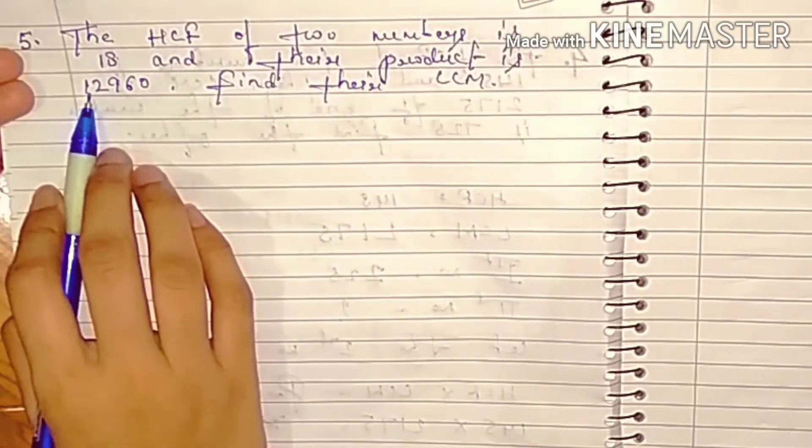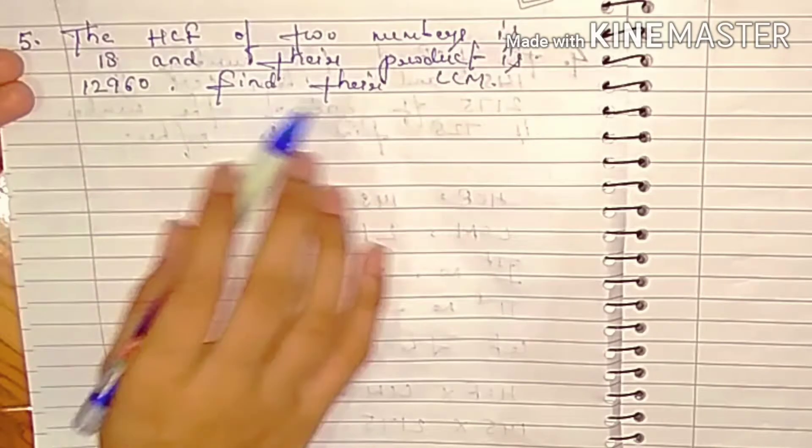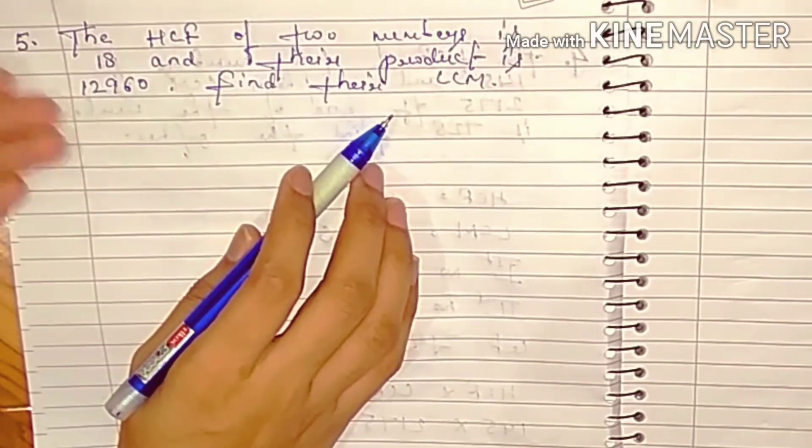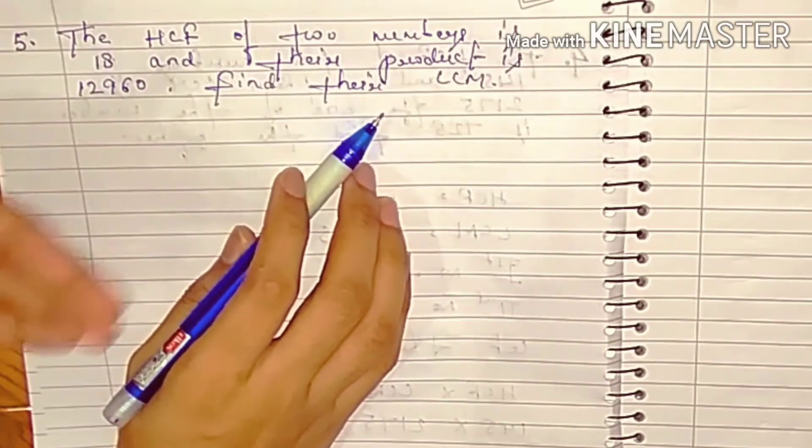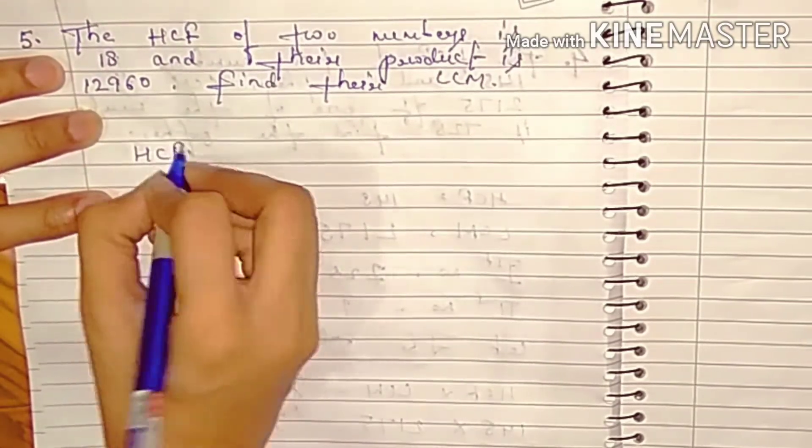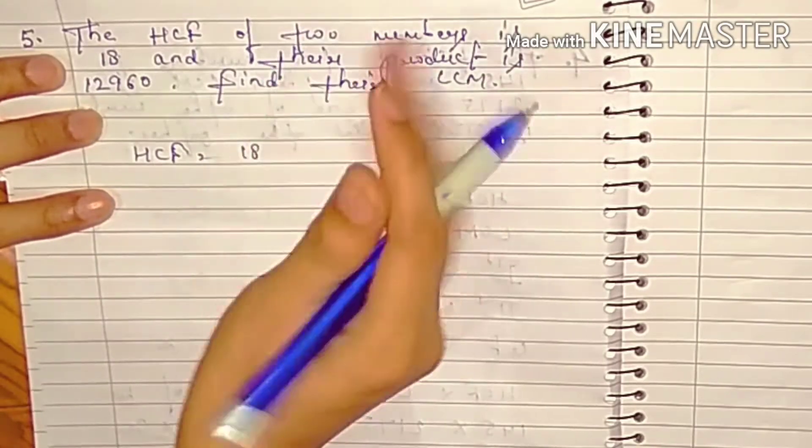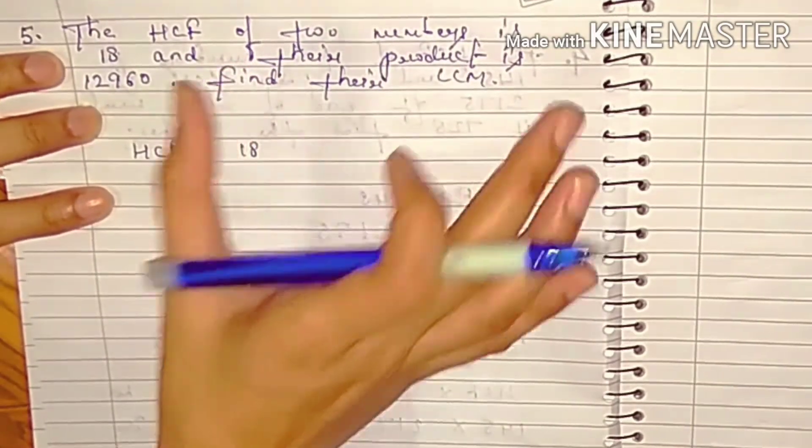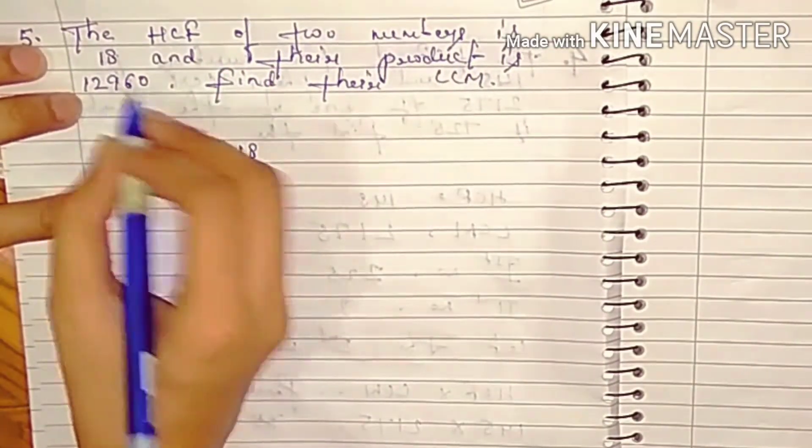So student, recall HCF into LCM is equal to product of the numbers. So this is the way. As you have the HCF value, 18, and the product of number value you have is 12,960.